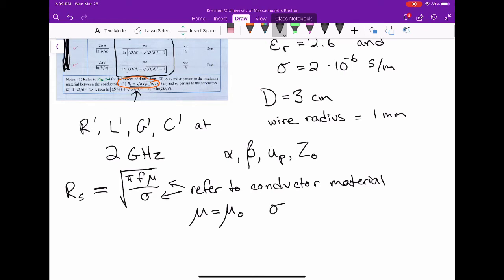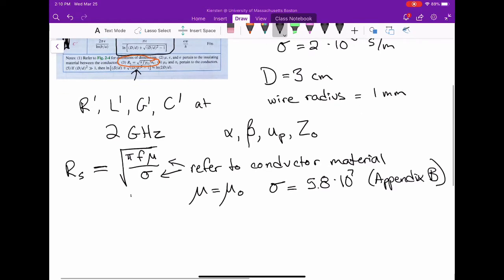σ is 5.8×10⁷, which you can get from appendix B. The frequency is 2 gigahertz. If I put all those numbers into my calculator, I get that Rs is 0.117 ohms.